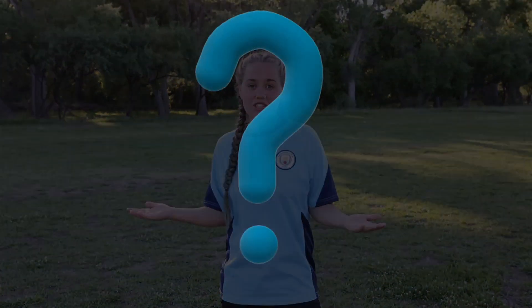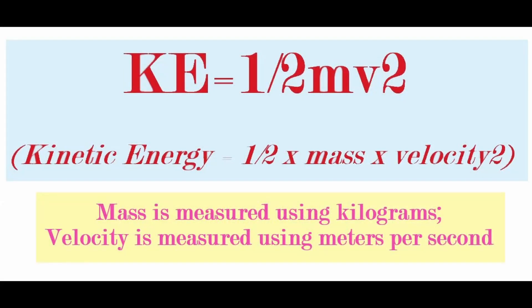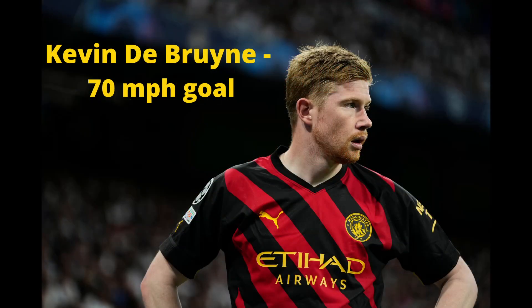So how is this related to kinetic energy? Kinetic energy is a property of an object in motion and is affected by mass as well as speed. It is measured using this equation, and instead of trying to show you this one myself, I will show you an example using pro footballer Kevin De Bruyne's 70 mile per hour goal in 2021.